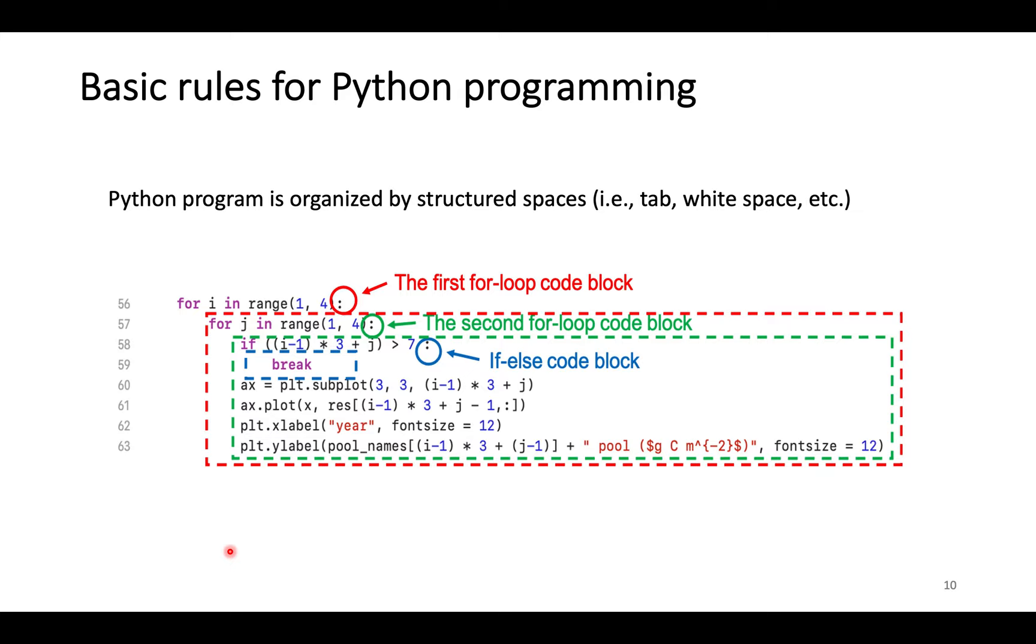Last but not least, Python code is organized by structured space or indentation. Generally, after a new colon, we need to add four more spaces at the beginning of expressions. The right level of indentation is important. Too much or too little space will induce an error.